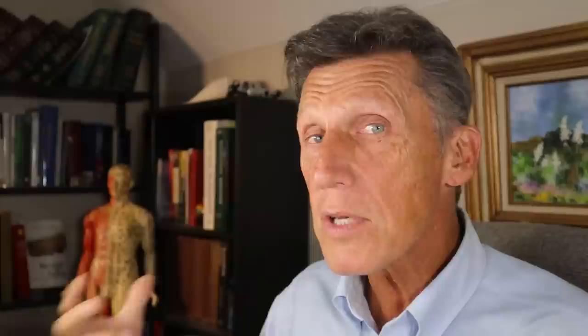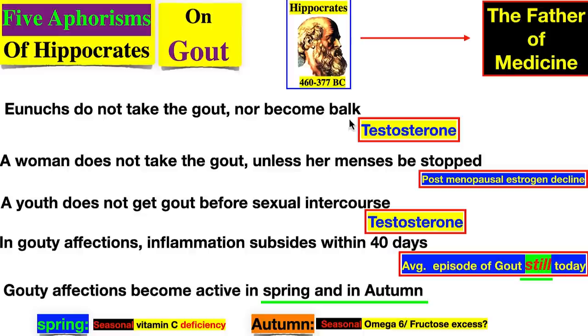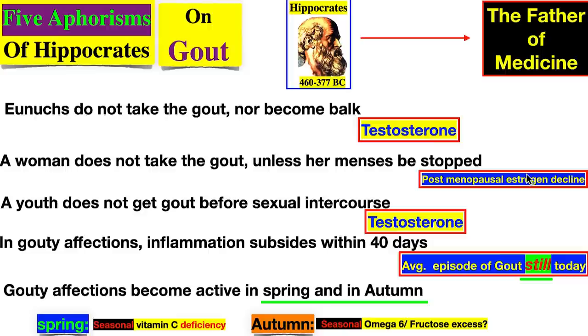Here's what Hippocrates said about gout — and this could be from any modern textbook today, not a word needs to be changed. Eunuchs do not get gout — that's low testosterone. Women do not get gout unless their menses have stopped — that's post-menopausal estrogen decline. When pre-menopausal, estrogen is uricosuric, meaning protective. A youth does not get gout before sexual intercourse — again, about testosterone. And the average episode of gout subsides within about 40 days — still true today.